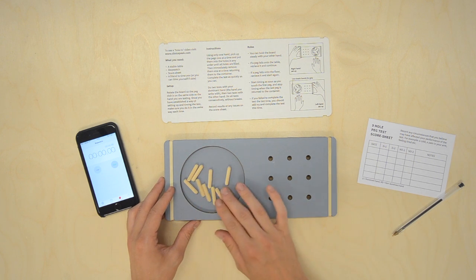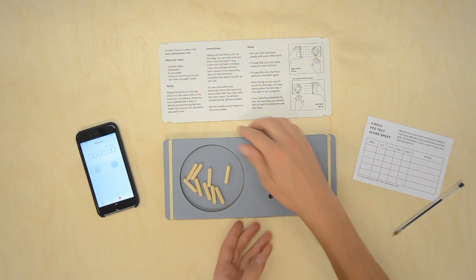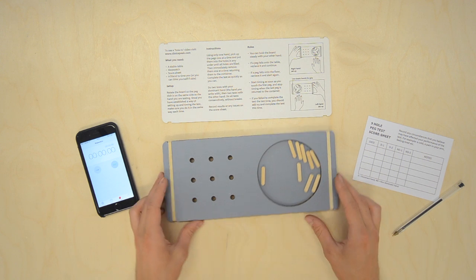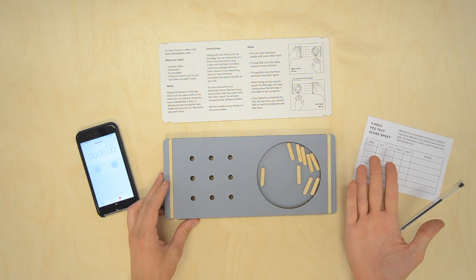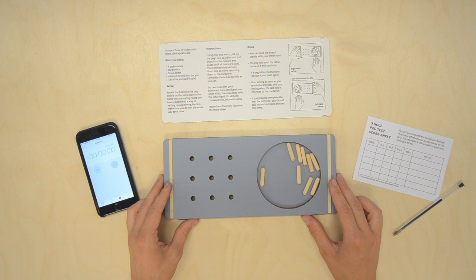Make sure you have 9 pegs in the dish. Rotate the board so the peg dish is on the same side as your dominant hand. This is the hand that you write with. You are now ready to start the test.